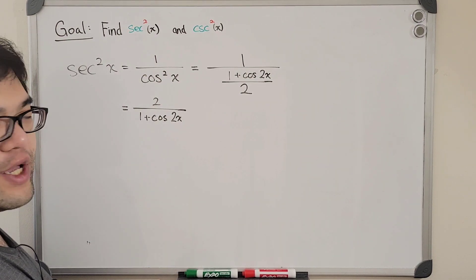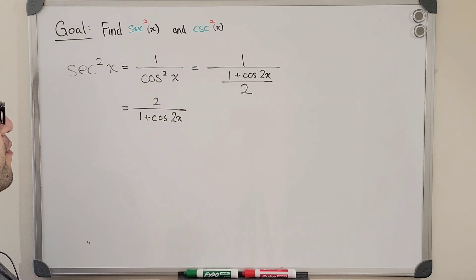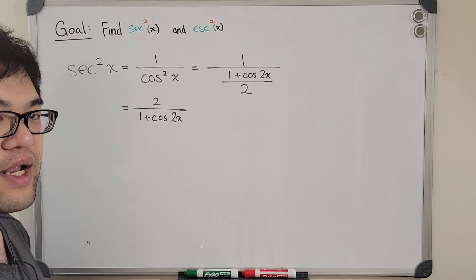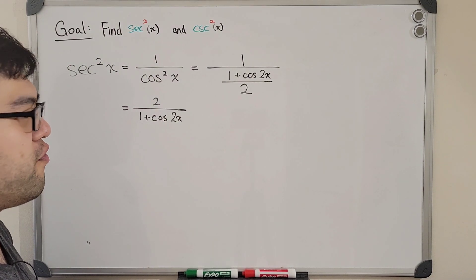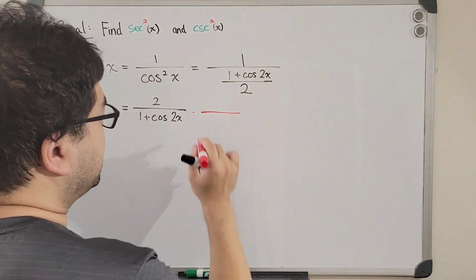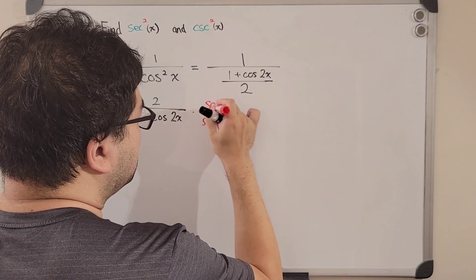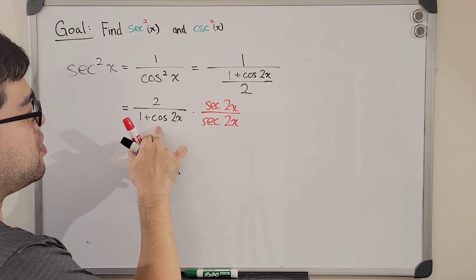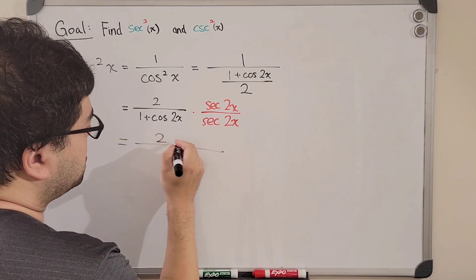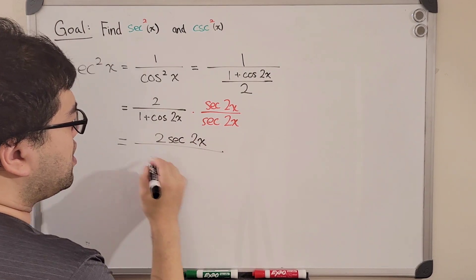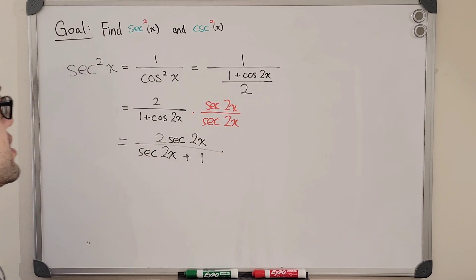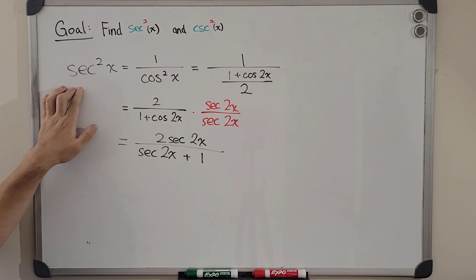We'd like to rewrite the expression in terms of secant. Luckily, cosine is the reciprocal of secant, so cosine = 1/sec. We multiply both top and bottom by sec(2x), so that cosine and secant cancel. Distributing, we get the final result: secant squared of x = 2·sec(2x) / (sec(2x) + 1).